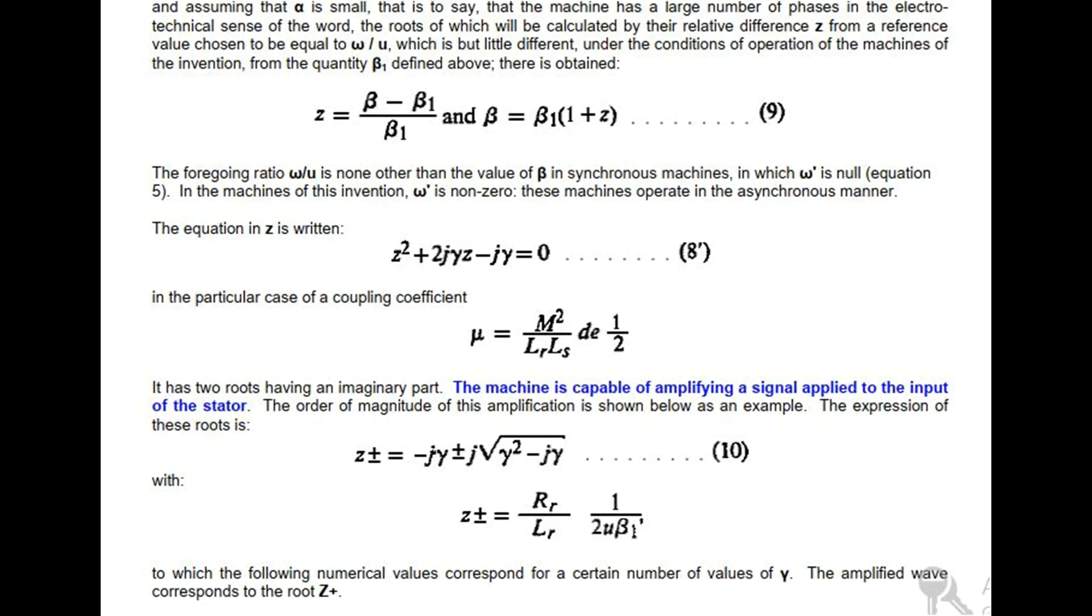The foregoing ratio omega-zero/U is none other than the value of beta in synchronous machines, in which omega-R is null, equation 5. In the machines of this invention, omega-R is non-zero. These machines operate in the asynchronous manner. The equation in z is written as shown.